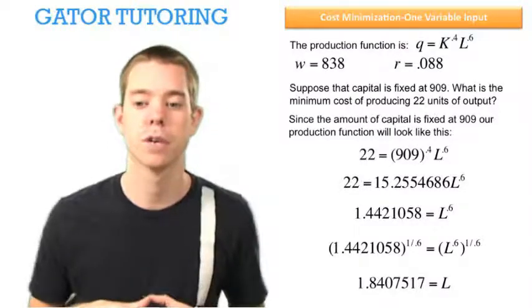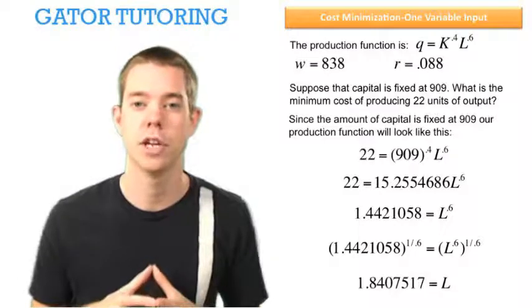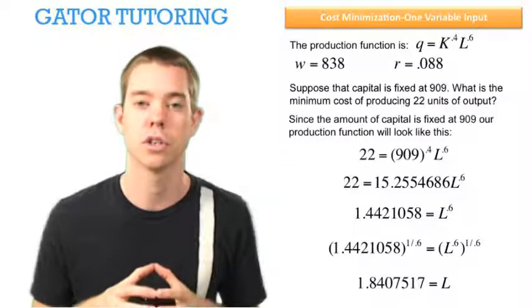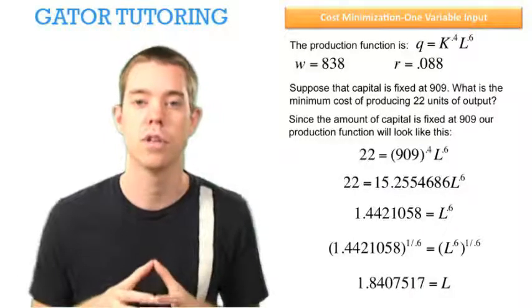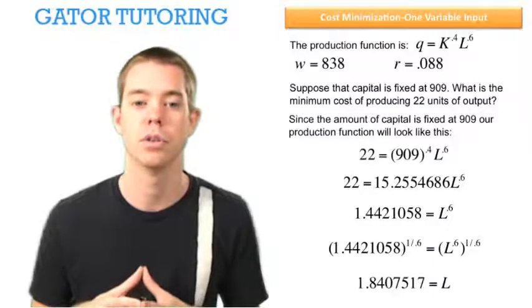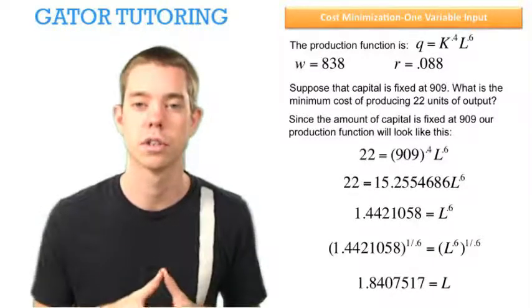This problem was different because we didn't have to use our equal bang for buck formula. We didn't have to minimize cost using optimization because we knew that capital was fixed. We just needed to solve for the amount of labor we would use to get to those 22 units of output.